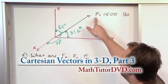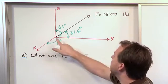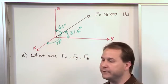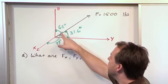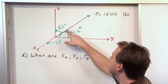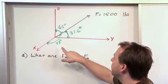So here we have a vector F. The magnitude is 1500 pounds, so the length of this vector is 1500 pounds. And what we are given are the direction angles. So we know that this angle is 65 degrees, this angle to the y-axis is 31.6, this angle to the x-axis is 72 degrees.